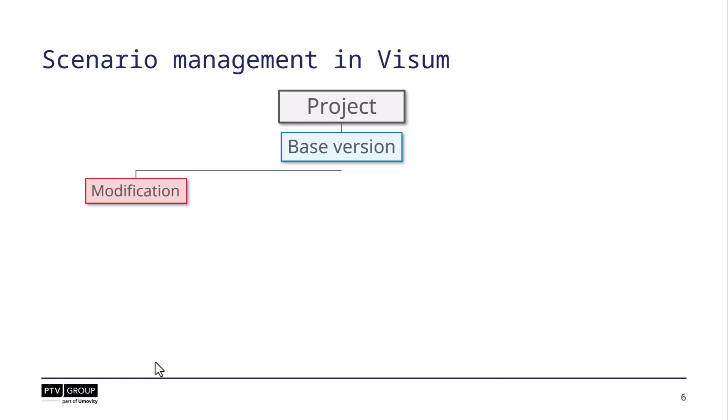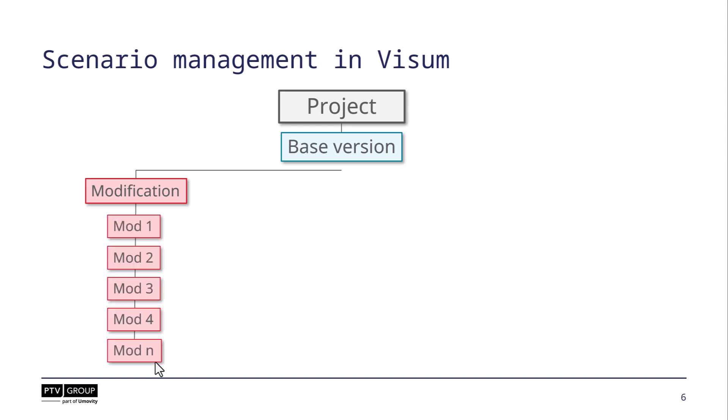A modification represents a single measure or a combination of measures. So for example, a new bus line, a changed layout of an intersection, a closed road, or the introduction of a restricted speed zone, etc.